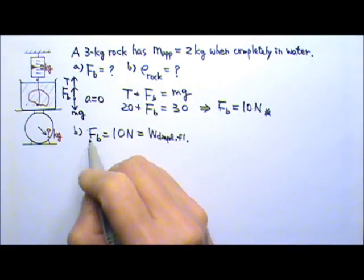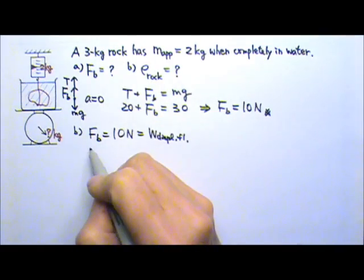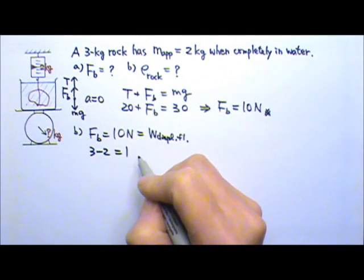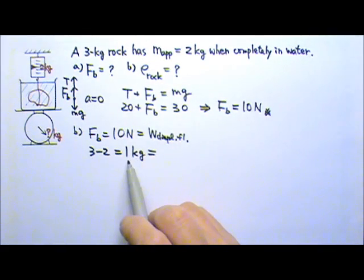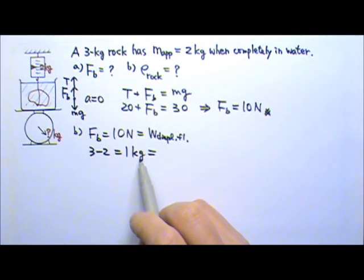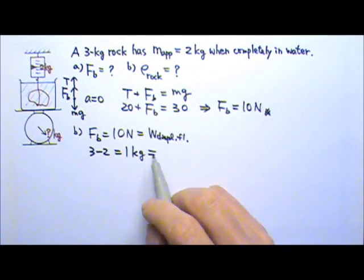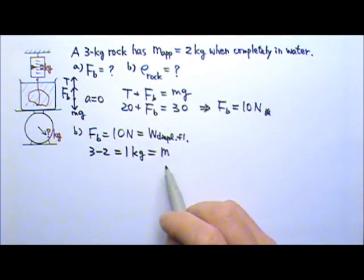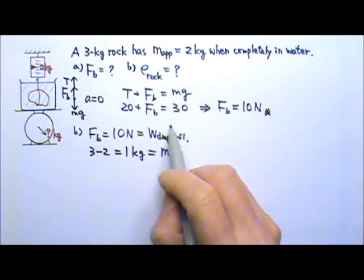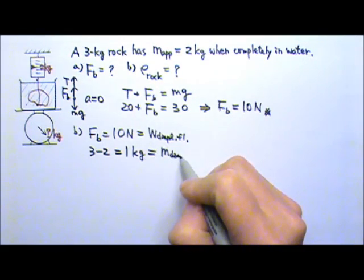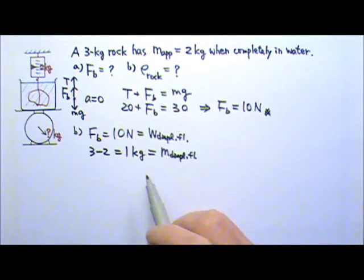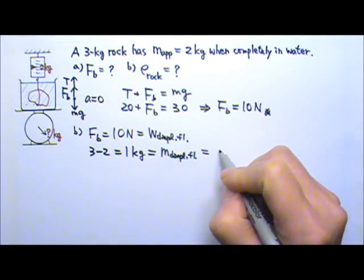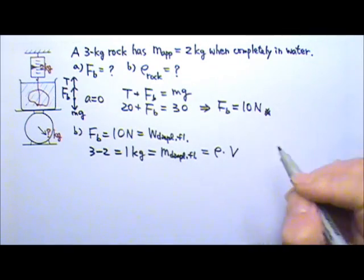Another way to look at this is that the rock has gotten 3 minus 2, 1 kg lighter. The rock got 1 kg lighter because of the buoyant force. So 1 kg must equal to the mass equivalent of the buoyant force. And the mass equivalent of the buoyant force will be the mass of the displaced fluid. So the mass of the displaced fluid must equal to 1 kg. And the mass equals to the density times the volume.